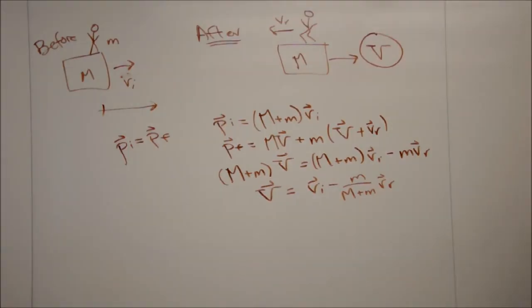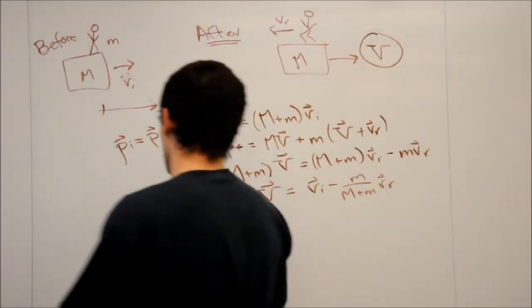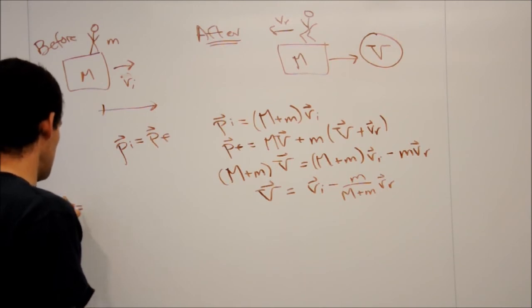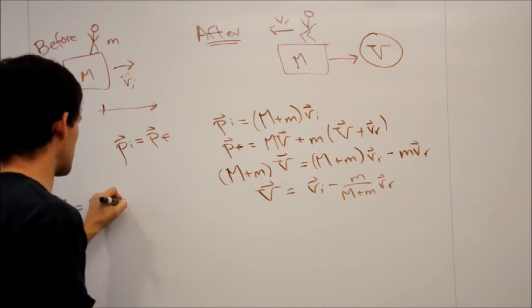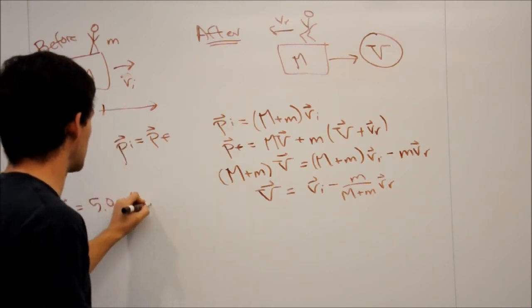Now we can start to plug in all of the values that we know. So in the problem statement, we're given that VI equals 5.0 meters per second, and that's going to be times x hat, because it's moving to the right.